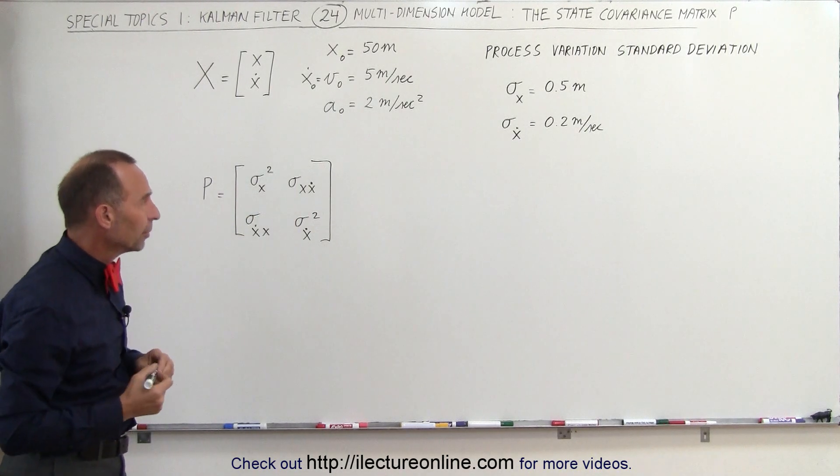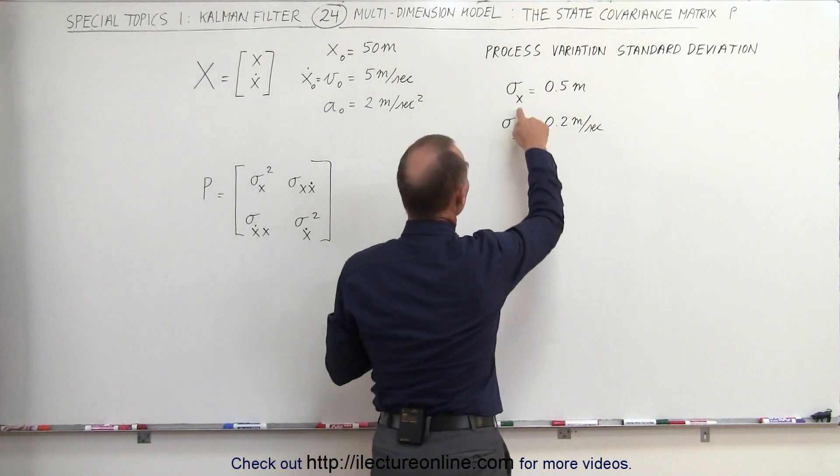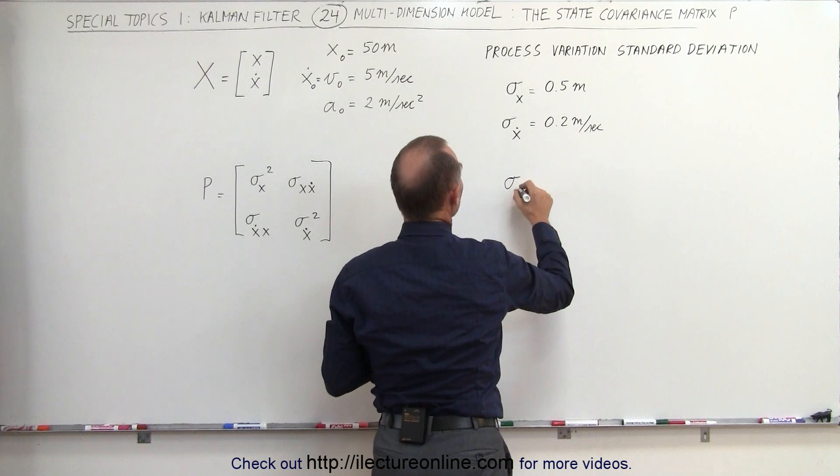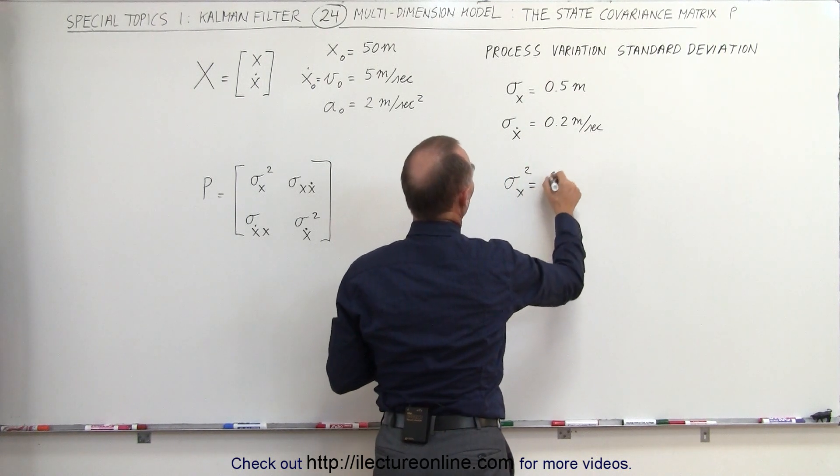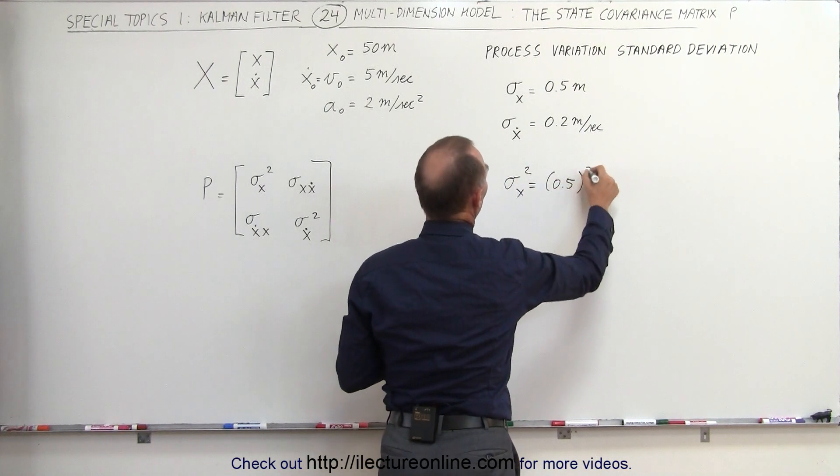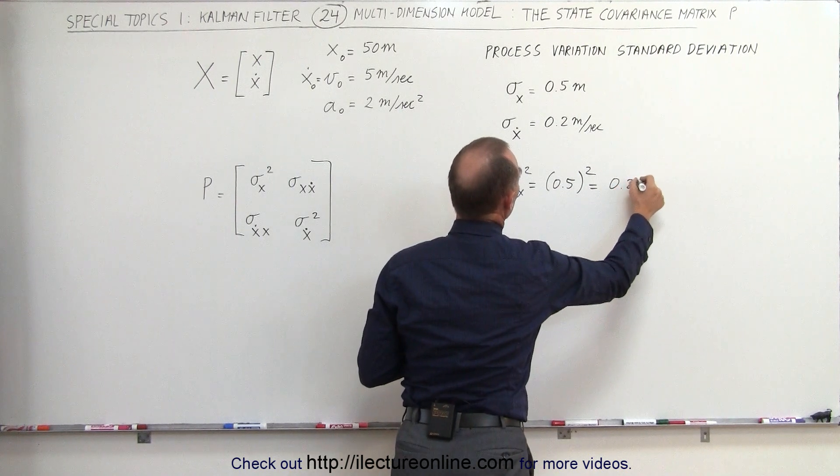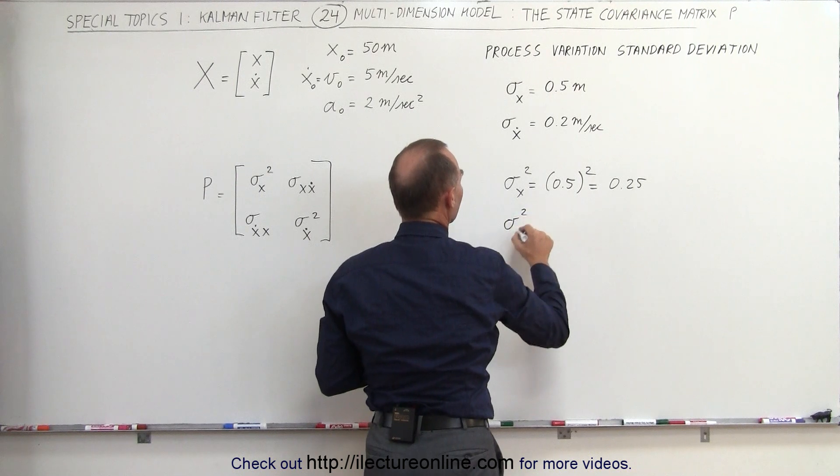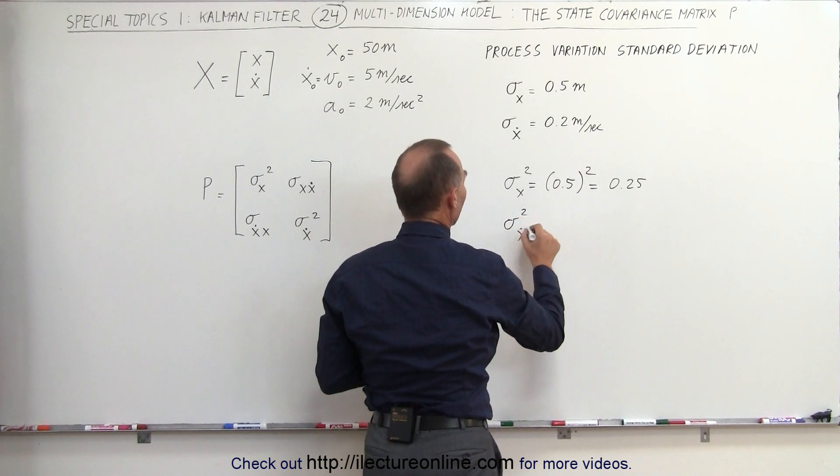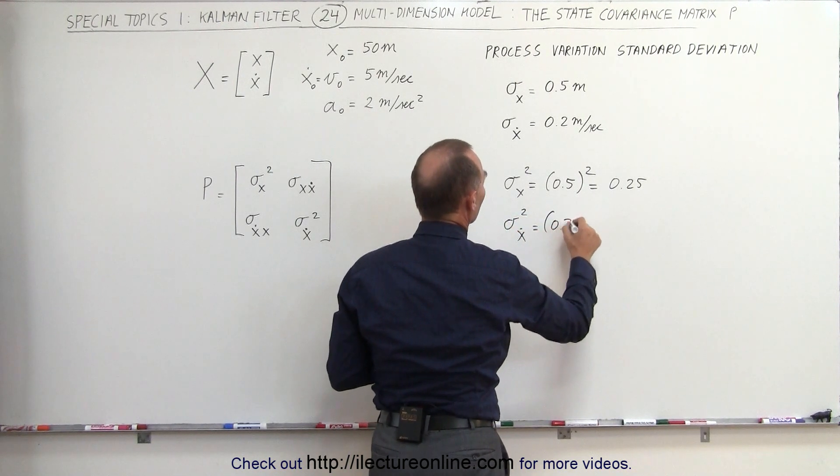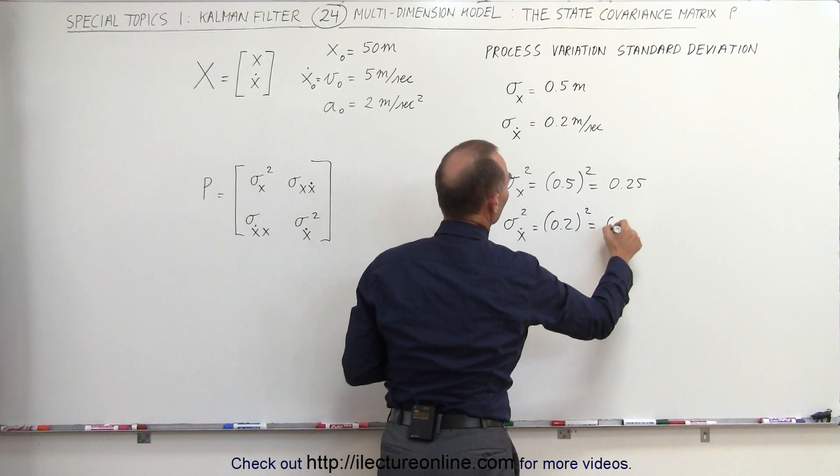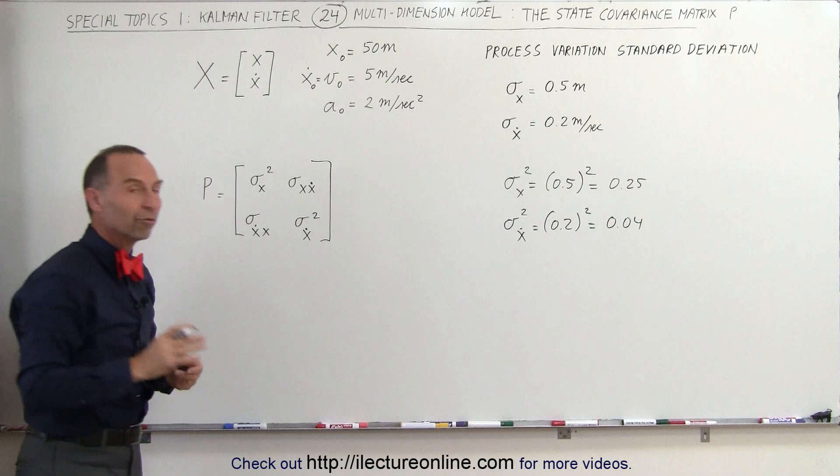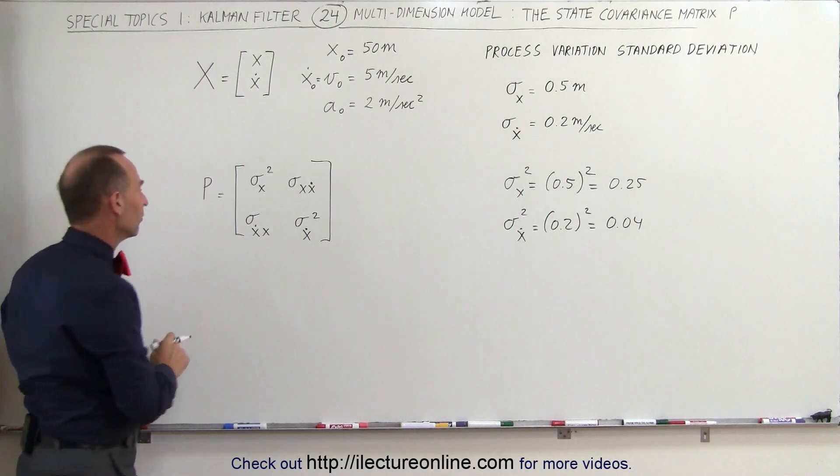Now let's calculate those elements. If the standard deviation is 0.5 meters, then the variance, which is the standard deviation squared, is equal to 0.5 squared, which equals 0.25. For the velocity, the variance is 0.2 squared, which equals 0.04. So those become the two diagonal elements, the variances in position and velocity.